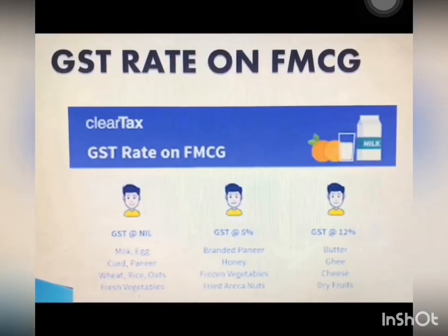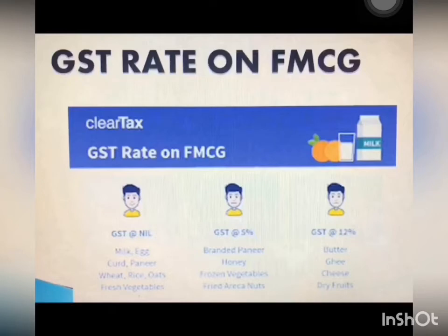Looking at the GST rate on FMCG products: GST has nil effect on milk, egg, curd, paneer, wheat, rice, oats, and fresh vegetables. There is 5% GST on branded paneer, honey, frozen vegetables, and fruits. And 12% GST is applicable on butter, ghee, cheese, and dry fruits.